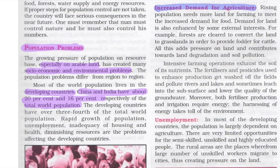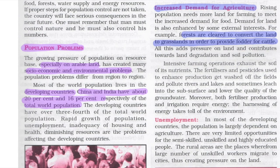As population grows, there is increased demand for farming to meet food demand. Demand for land is enhanced by external interest; for example, forests are cleared to convert land to grasslands to provide fodder for cattle. Intensive farming operations exhaust soil of its nutrients. Fertilizers and pesticides used to enhance production get washed off fields, polluting rivers and lakes, and sometimes leach into sub-surfaces, lowering the quality of groundwater.